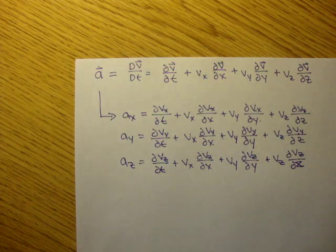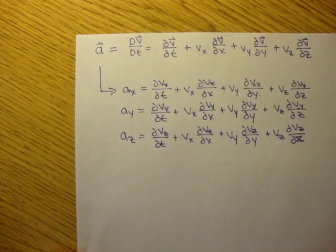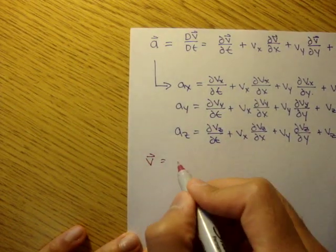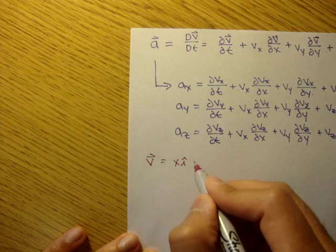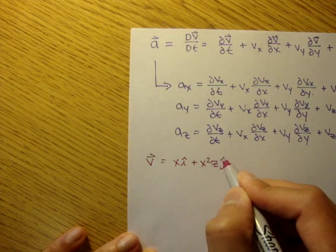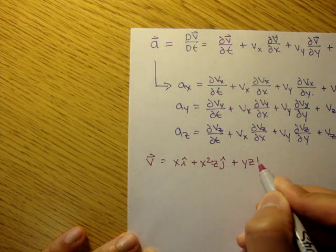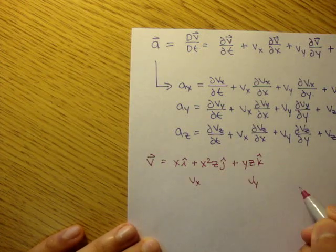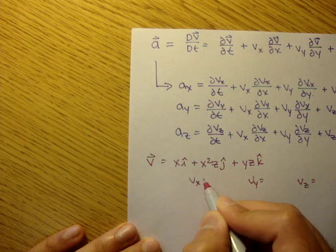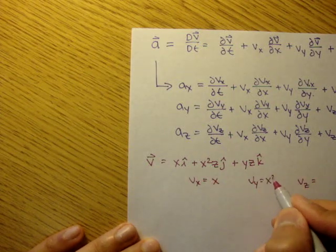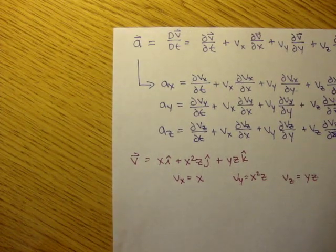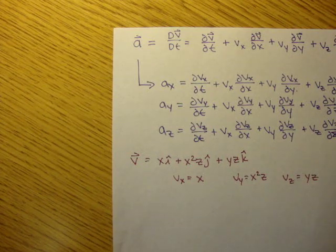A quick example: a velocity field is given by V = x·i + x²z·j + yz·k. So our vx, vy, and vz are respectively equal to x, x²z, and yz.